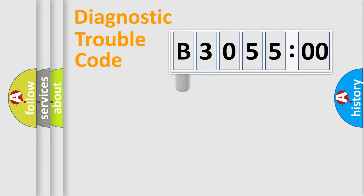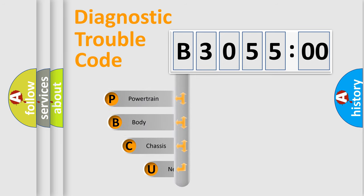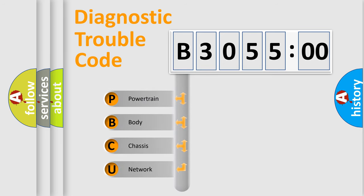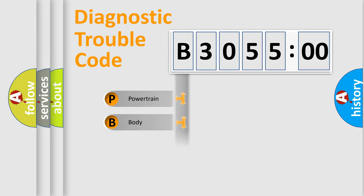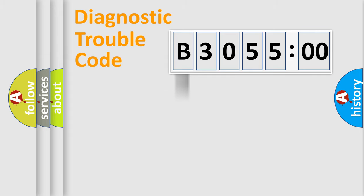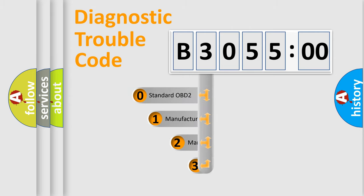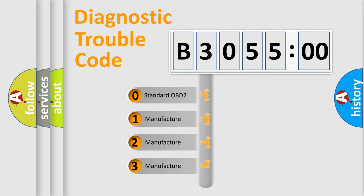Let's do this. First, let's look at the history of diagnostic fault code composition according to the OBD2 protocol, which is unified for all automakers since 2000. We divide the electric system of the automobile into four basic units: Powertrain, Body, Chassis, and Network. This distribution is defined in the first character of the code.